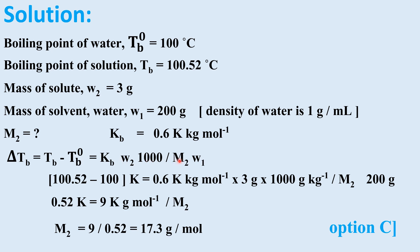Apply: delta Tb = Kb × (W2 × 1000) / (M2 × W1). Substituting: 100.52 − 100 = 0.52 Kelvin = 0.6 × (3 × 1000) / (M2 × 200). Solving for M2: M2 = (0.6 × 3000) / (0.52 × 200) = 1800 / 104 = 17.3 gram per mole. Option C is correct.